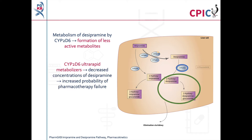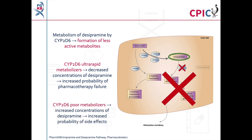In CYP2D6 ultra-rapid metabolizers, metabolism of desipramine is increased. This reduces the concentrations of desipramine in the body, which increases the probability of pharmacotherapy failure. In CYP2D6 poor metabolizers, metabolism of desipramine is reduced. This increases the concentrations of desipramine in the body, which increases the probability of side effects.